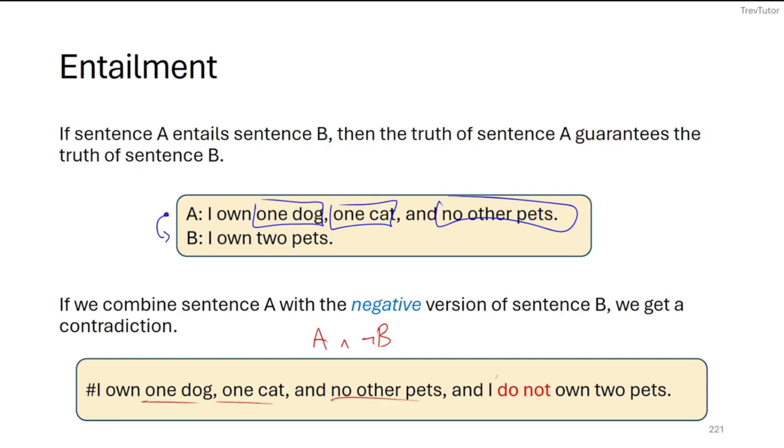But then they're saying that they don't own any pets. Well, don't own two pets. So we get our contradiction there, which tells us that the first sentence entails the second.